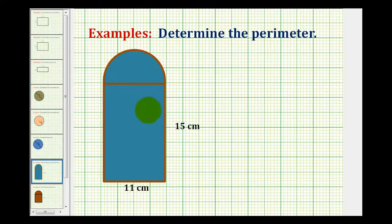We want to determine the perimeter of the given figure, which would be the distance around the outside, and notice how three of the sides would be the sides of a rectangle.